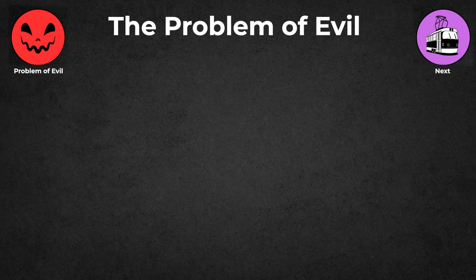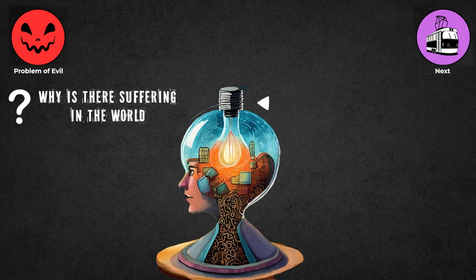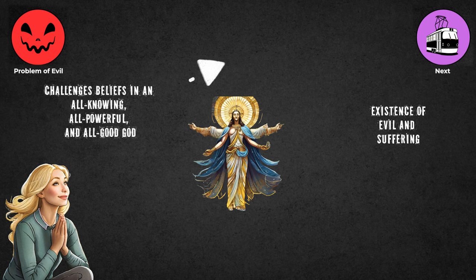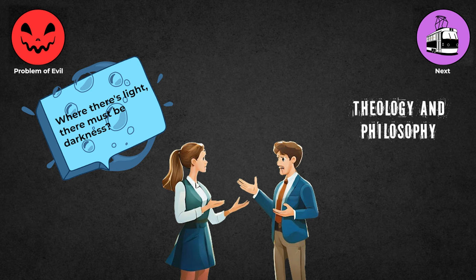The Problem of Evil: This thought experiment raises questions about why there is suffering in the world if God is all-powerful and all-good. If God can prevent evil and suffering and wants to, why do they exist? This difficult question challenges beliefs in an all-knowing, all-powerful and all-good God, suggesting that these traits may not be compatible with the existence of evil and suffering. It has sparked much debate in theology and philosophy. Is it as simple to say where there's light, there must be darkness?